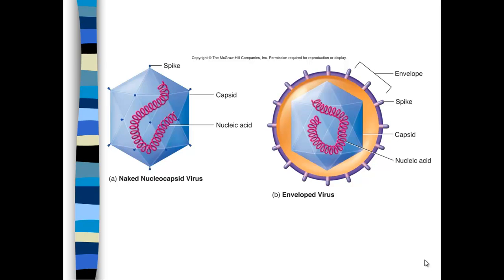Here are two different types of viruses. On the left, we have a naked nucleocapsid virus with no envelope. You see the nucleic acid core inside and an almost spherical capsid made out of multiple capsomers — each one of those triangles we call a capsomer. At the corners of the capsomers there are glycoprotein spikes that help the viruses gain entry into host cells. On the right side, we have an enveloped virus with the same basic structure inside, plus a double membrane donated from the host cell, with spikes embedded in the envelope itself.